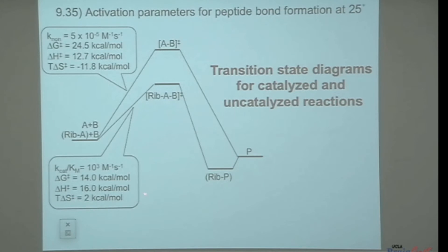Remember, if you increase the entropy of activation, since there's that negative sign in the equation delta G equals delta H minus T delta S in front of the delta S term, that reduces the free energy of activation.